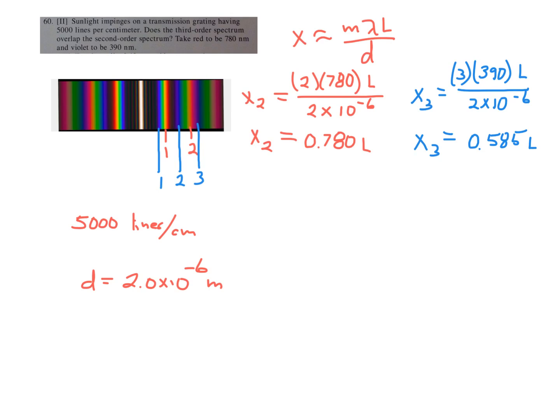your central maximum will still be white, but then the colors that bend the most, the red, will be bent furthest away from the central maximum. Some of their interference maximum peaks will be more spread out than the violet or the blue.